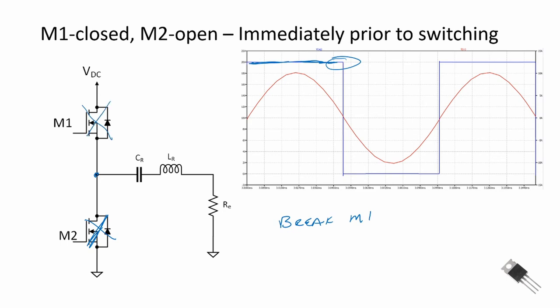When M1 opens up, the current will switch and flow through the body diode of M2. At this point in time, right before the switching, we start to turn off M1, M1 opens up, the current is still flowing a little bit and starts to flow through the body diode of M2. When that happens, the voltage across M2 becomes near zero.